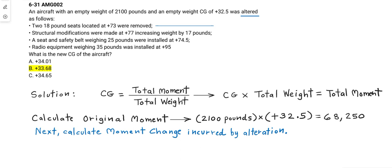We have two 18 pound seats at positive 74 removed, so that is negative 18 pounds times 2 then times 73, so negative 2628 moment change incurred by the two 18 pound seats that were removed. And then we follow suit and do the same.